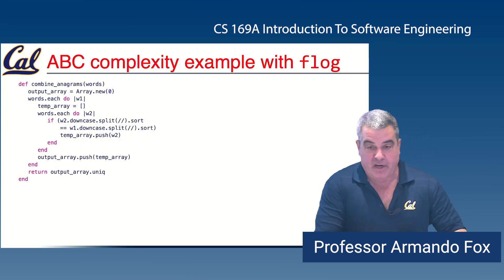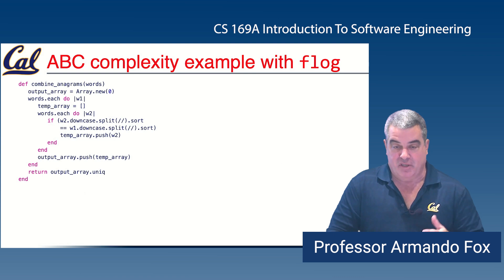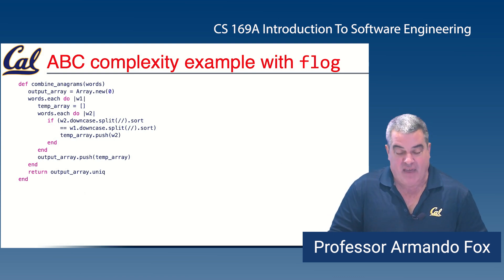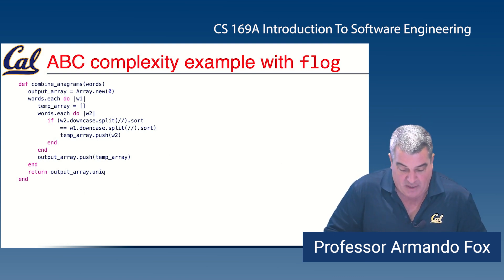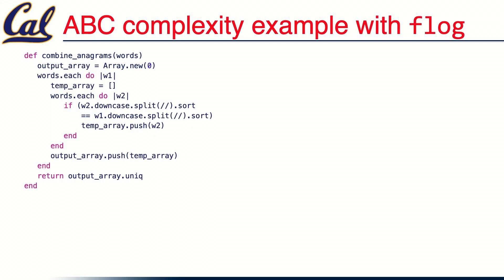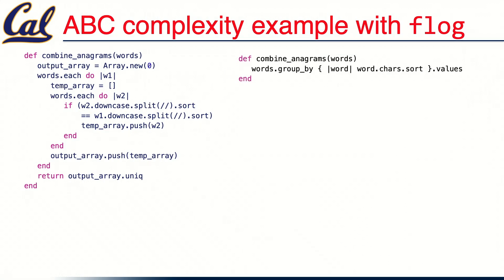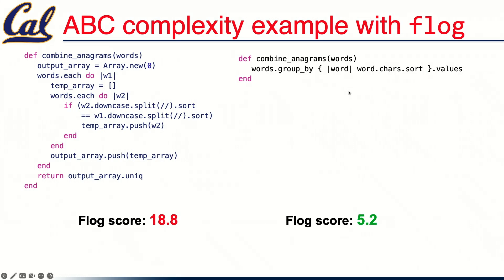Let's look at an example of a drastic reduction in ABC complexity. These are two real but anonymized submissions from an early assignment, where you have to combine anagrams of words — you're given a bunch of words and have to return them grouped by which ones are anagrams of each other. The code on the left works, but the refactored version on the right does exactly the same thing, makes better use of idioms, and has a much lower FLOG score. One of the benefits of refactoring is that you can actually make your complexity go down by finding more efficient ways to do things.